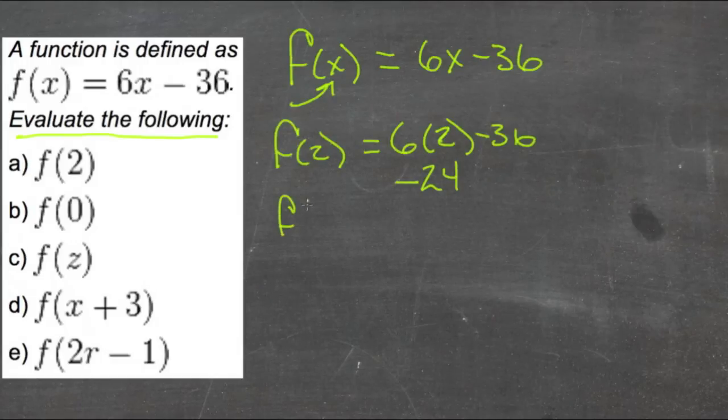f of 0, we plug 0 in where x is, so we get 6 times 0 minus 36. And if we have 6 times 0, that's just 0. 0 minus 36 is negative 36.